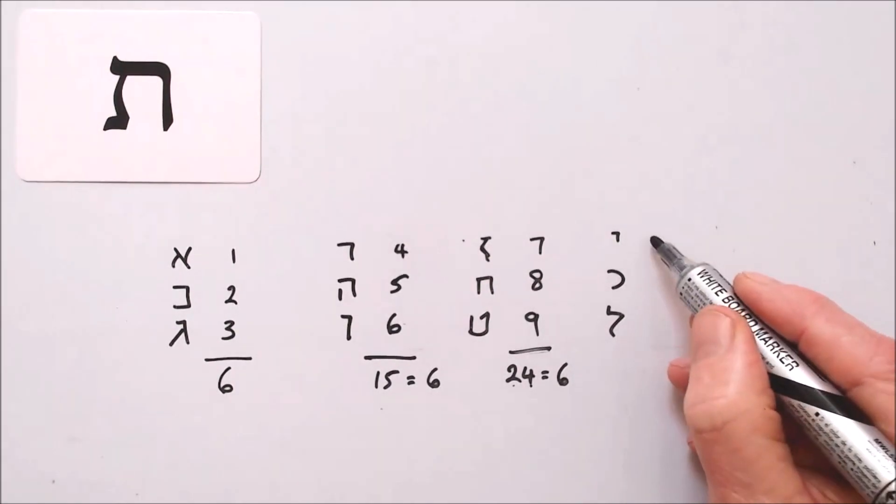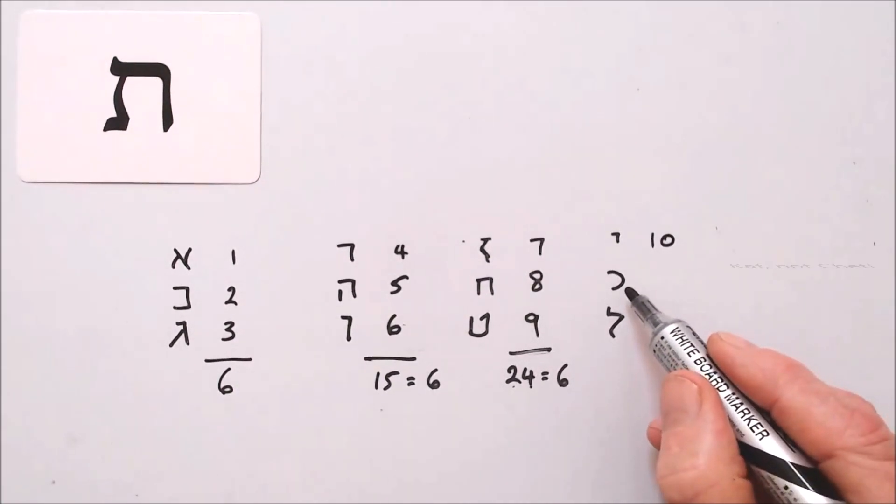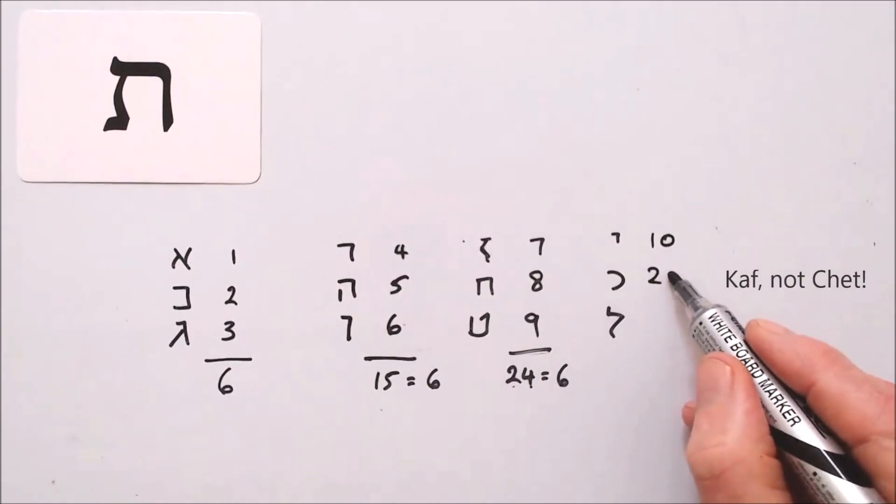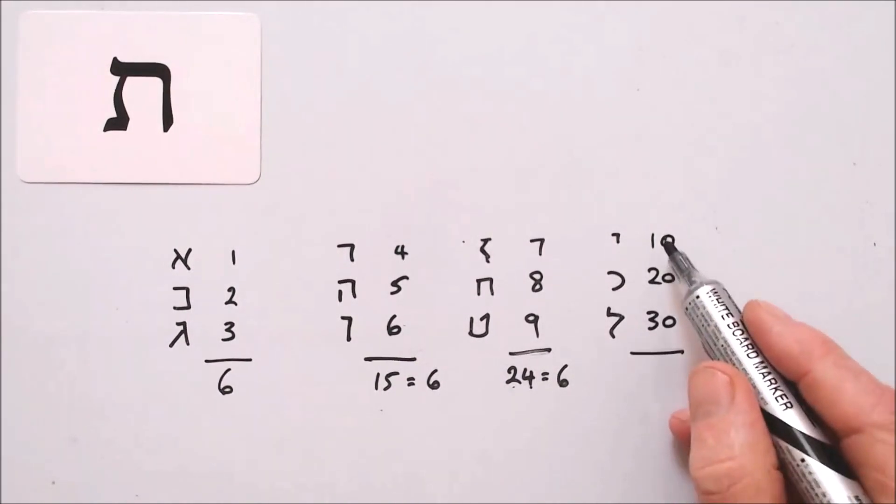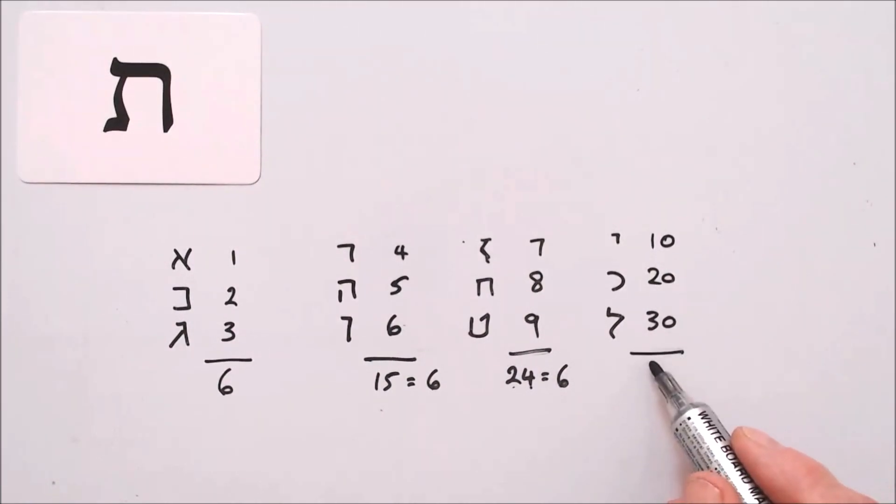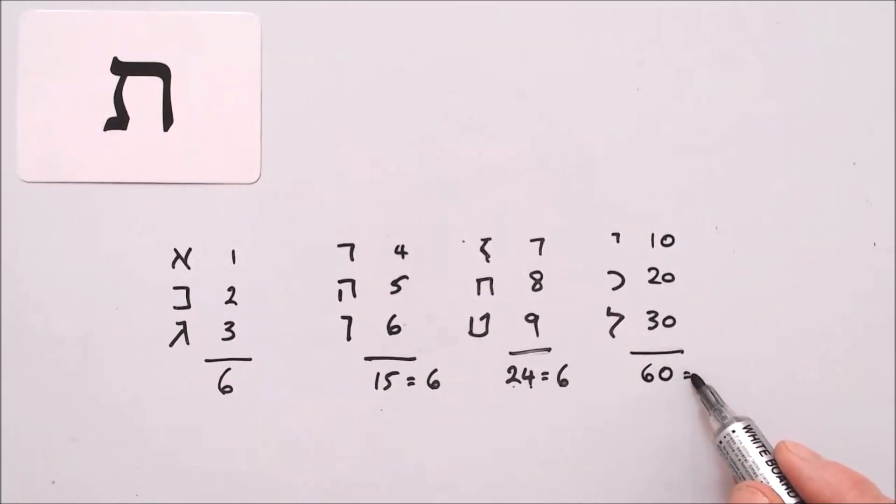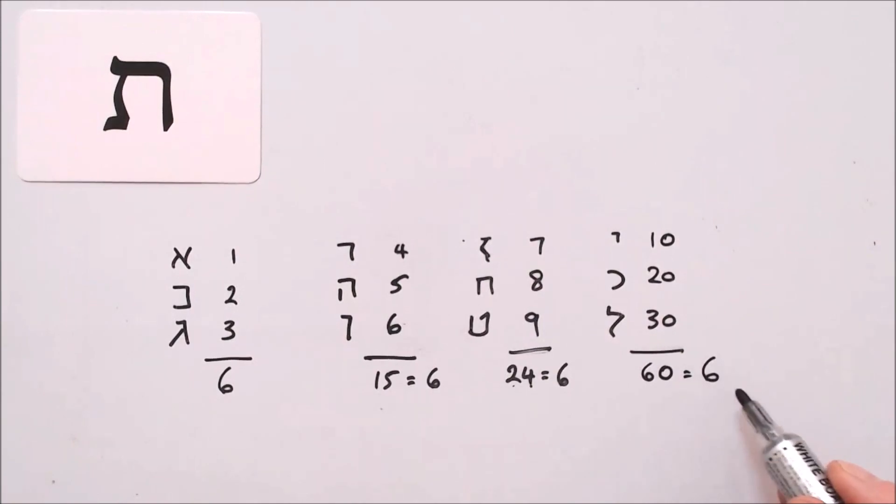And finally, the Yud is ten, the Kaf is twenty, the Lamed is thirty. Add them up. We get ten, twenty, thirty, sixty. Get the digit sum. Six plus zero is six.